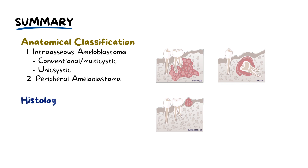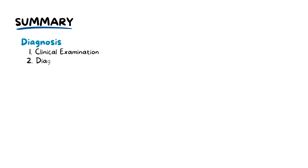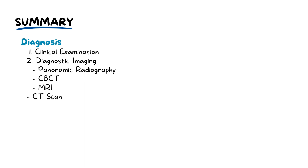From a histological viewpoint, the six classifications include follicular, plexiform, acanthematous, granular cell, desmoplastic, and basal cell types, each showcasing distinct cellular structures and patterns. Diagnosis involves clinical examination and imaging, like panoramic radiography, CBCT, MRI, and CT scans for detailed perspectives, with a biopsy serving as a definitive diagnostic tool.